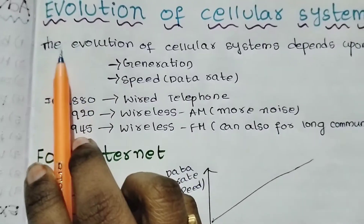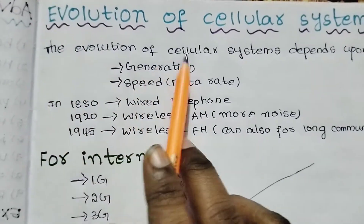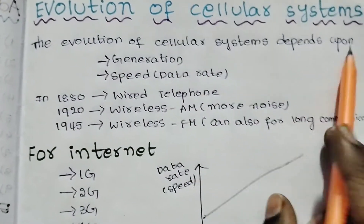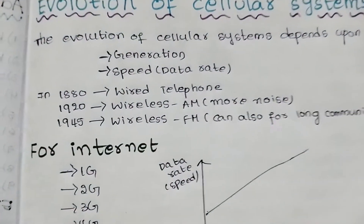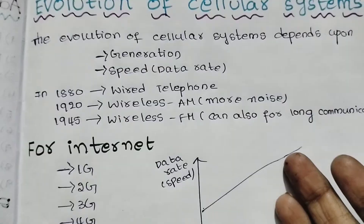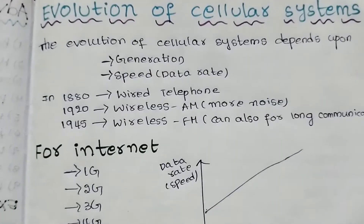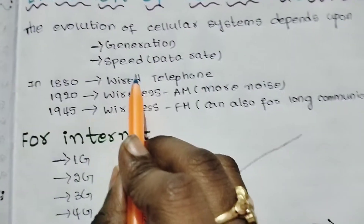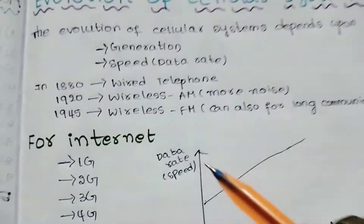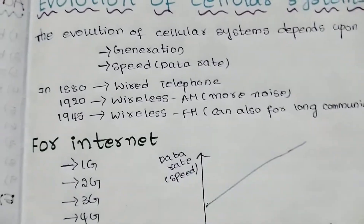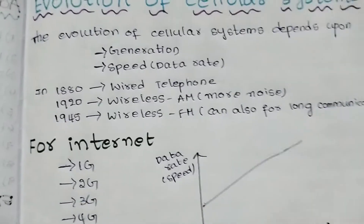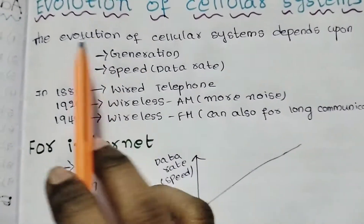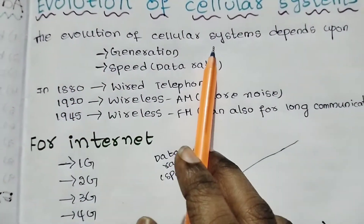First, the evolution of cellular systems depends on generation and speed. Based on generation and speed, we will talk about the evolution of cellular systems.